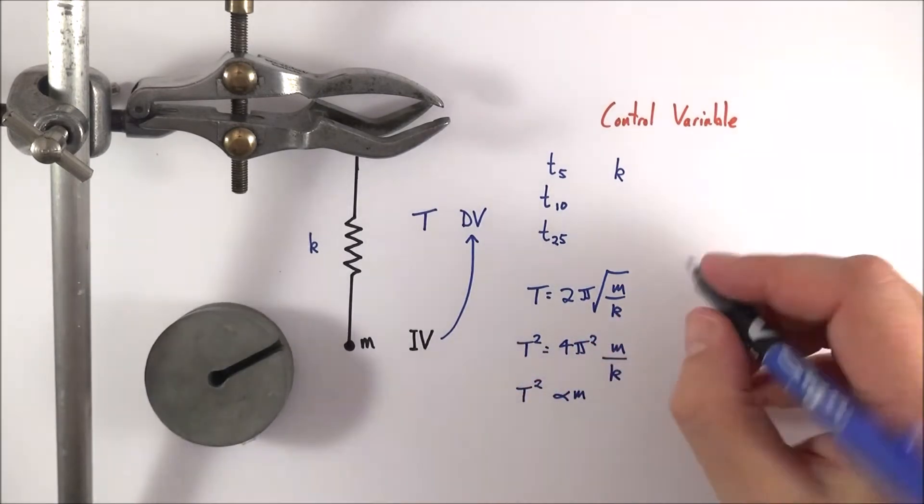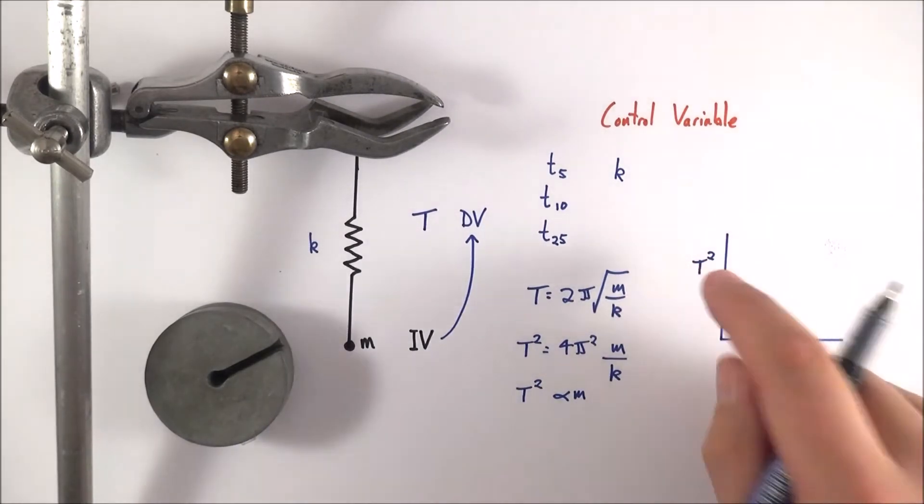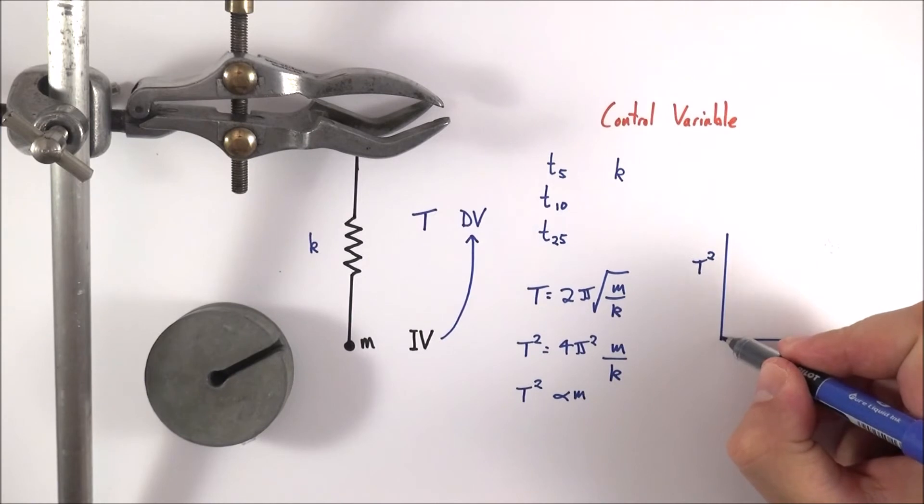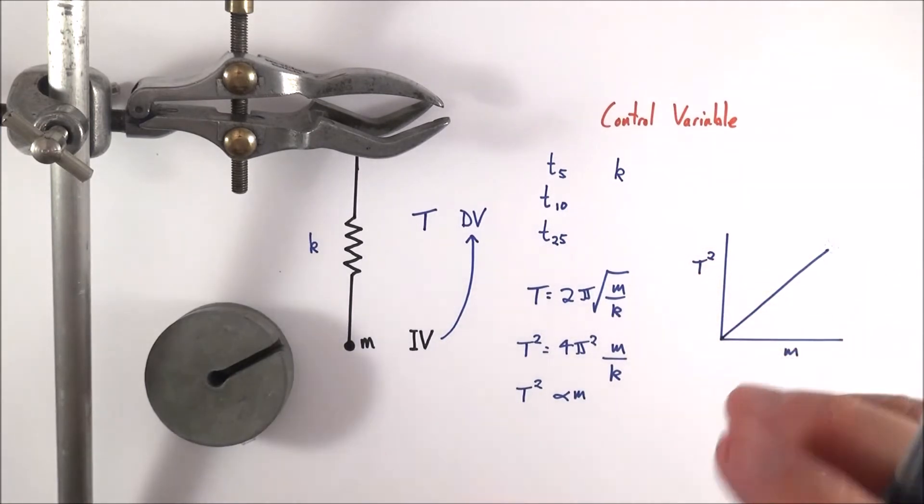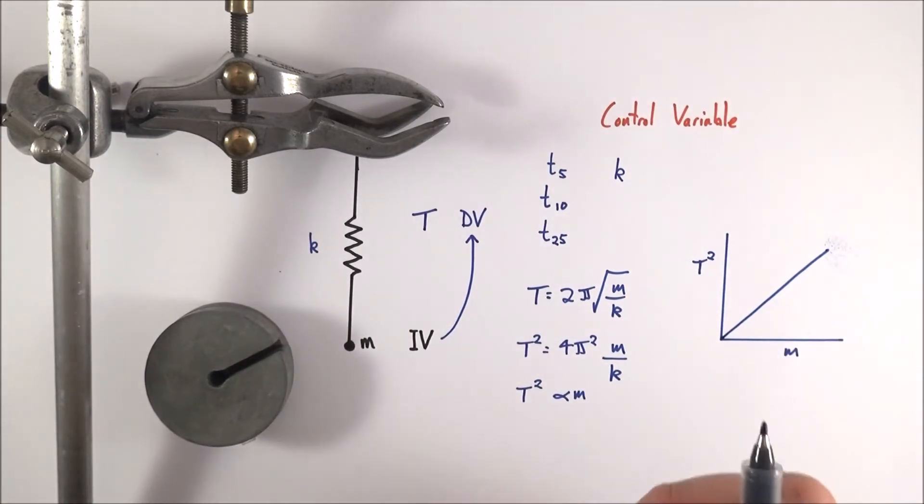So maybe we do an experiment, we get some data and when we plot this data with my independent variable here and my dependent variable here, what we might find is that you get a trend between these two things. Now if you have a fair test, it means our data is both reproducible and repeatable.